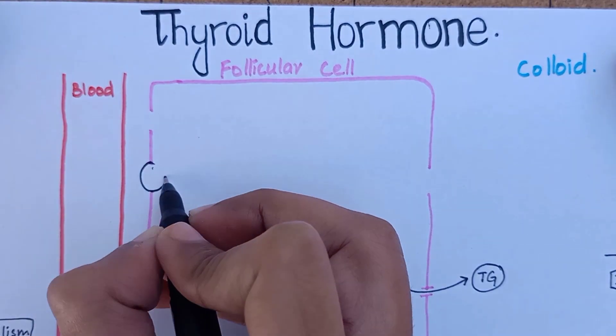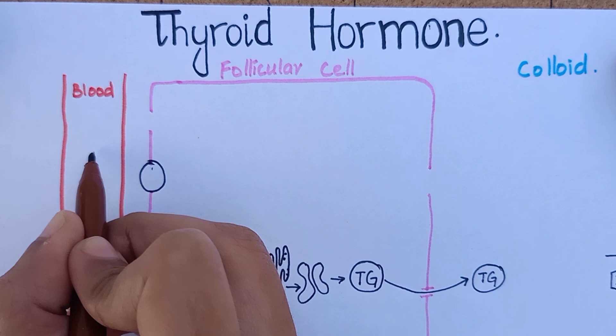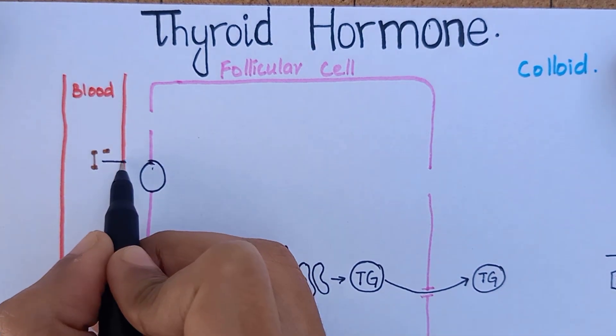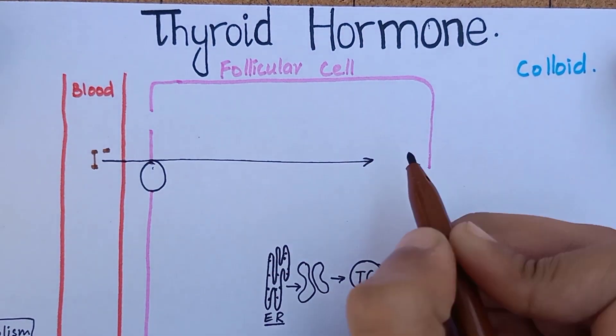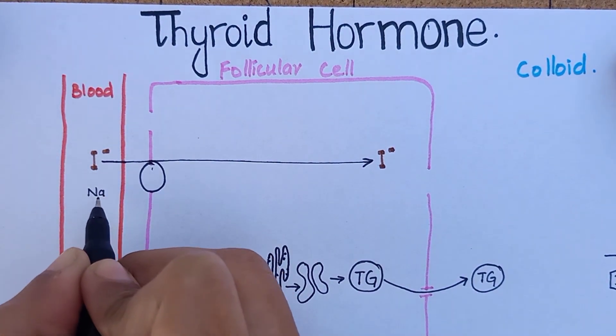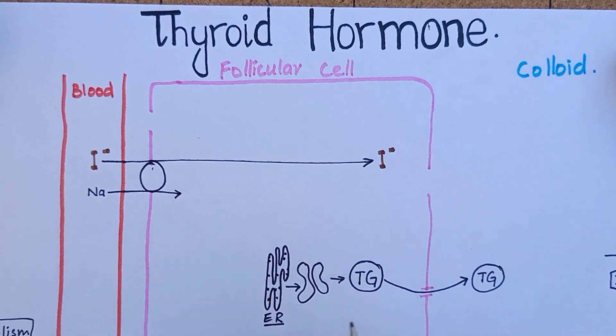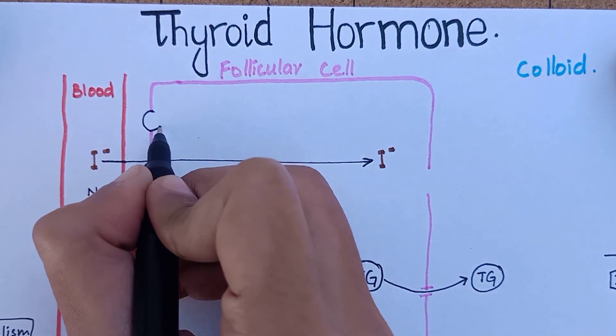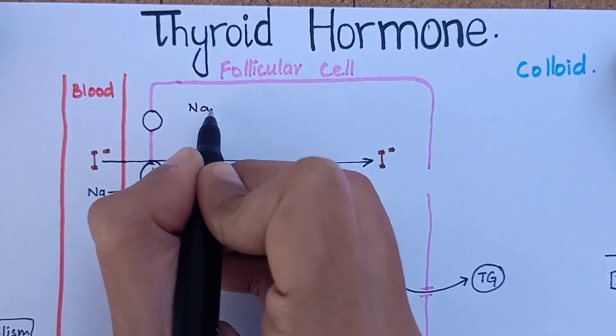Meanwhile, there is transport of iodide from blood into the follicular cells. This transport is achieved by a sodium-iodide symporter on the basal membrane. The energy for transporting iodide against the concentration gradient comes from the sodium-potassium ATPase pump that is also present on the basal membrane.